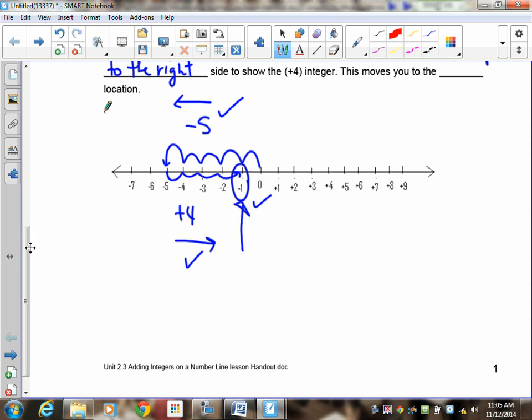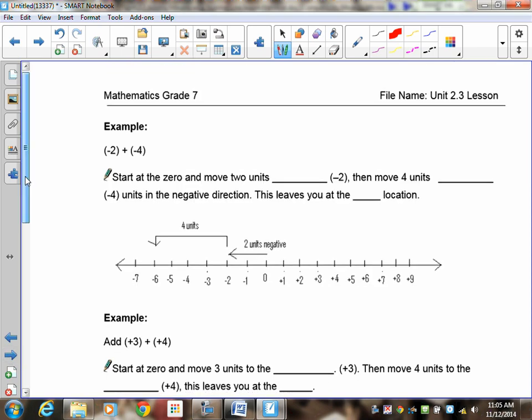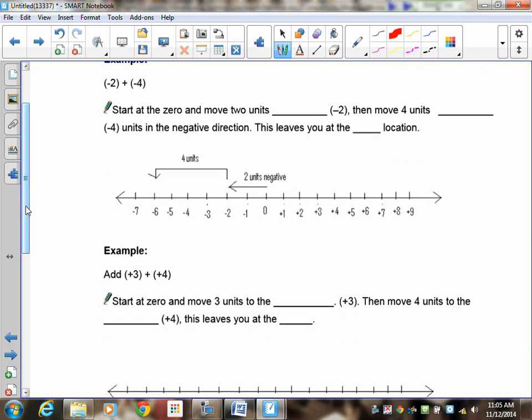Turn the page. Now, positive 2 plus negative 4. I've drawn this one for you to show it. The first thing you do, you're going to start at zero and move 2 units left. That's going to take you from here to here. 1, 2. Then you're going to move 4 units left again. Now why left again? Well, you'll notice this is also still negative. So I'm going to go negative again.